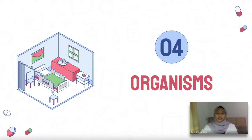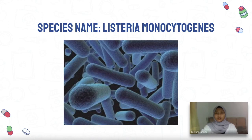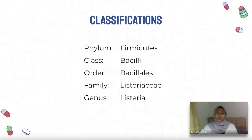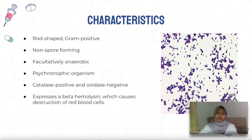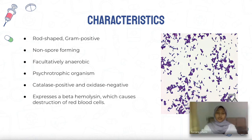My name is Farzana and I will explain the first example of new and emerging pathogens: Listeria monocytogenes. The classification is phylum Firmicutes, class Bacilli, order Bacillales, family Listeriaceae, and genus Listeria. The characteristics include rod-shaped and gram-positive — retaining the violet stain after the decolorization step of gram staining. They do not produce spores and are facultatively anaerobic, meaning they can survive in both oxygen-rich and oxygen-deprived conditions.